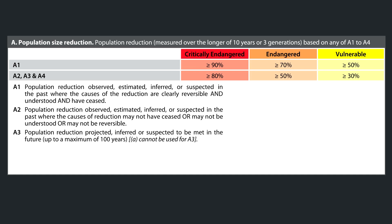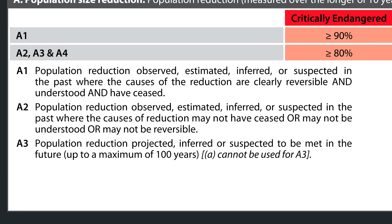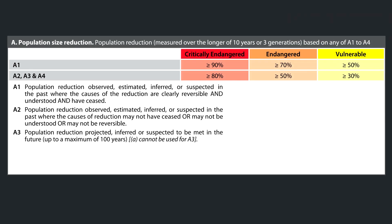A3 refers to the future — it's a population reduction projected, inferred, or suspected to be met in the future up to a maximum of 100 years. The logic for all the A criteria is that if the species is on a rapid decline, it doesn't matter how many are left because they're going to go away soon. So all of the thresholds are percentage thresholds, because if you've lost 80 or 90% of your population in the last three generations or 10 years, that population is in serious risk of disappearing entirely.